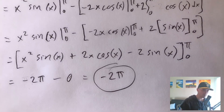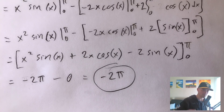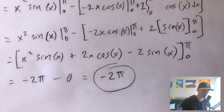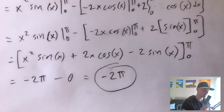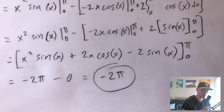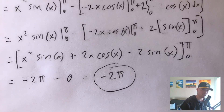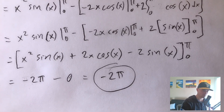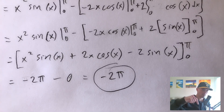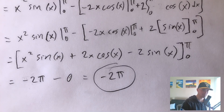So the answer is negative 2pi. This formula is on my Calc 2 study guide — there's a link down in the description where you can grab it for yourself. It's available for instant download, you can print it out and use it as you study and work through homework. Go check it out, just click the link in the description. Thanks and see you next time.